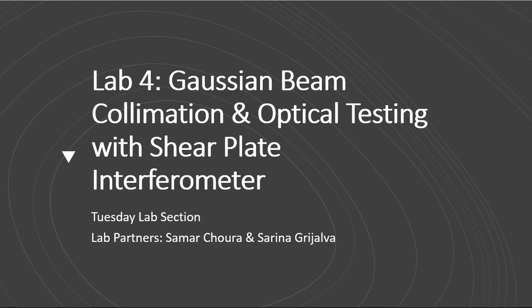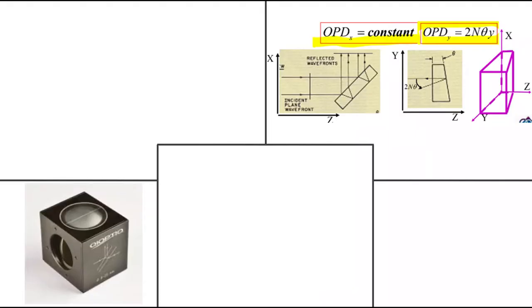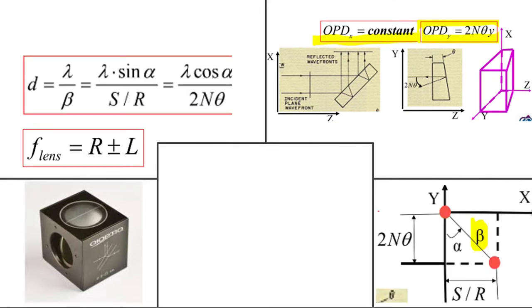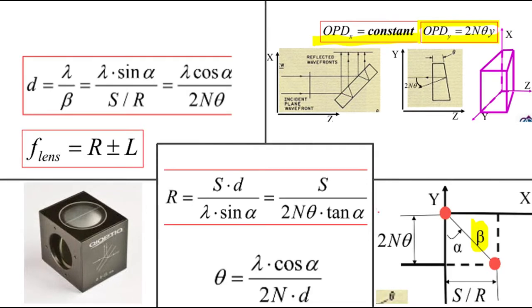In this lab, number 4, we learned how to use a wedged shear plate interferometer to assist in optical testing calculations such as focal lengths of mirrors and lenses and radius of curvature of wavefronts.